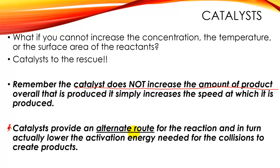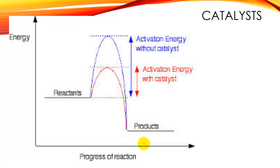What catalysts actually do is provide an alternate route for the reaction — like a detour. You're going to get to the same place, but that different route the catalyst offers has a lower activation energy, making it cheaper or easier to overcome. Therefore more collisions will occur in the right orientation and with enough energy to get over that barrier.